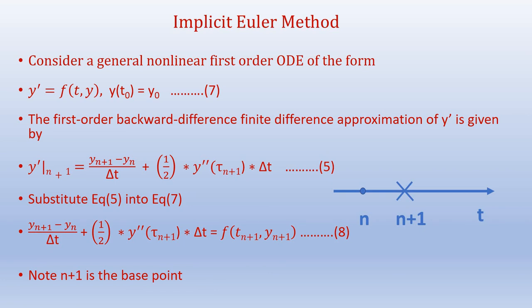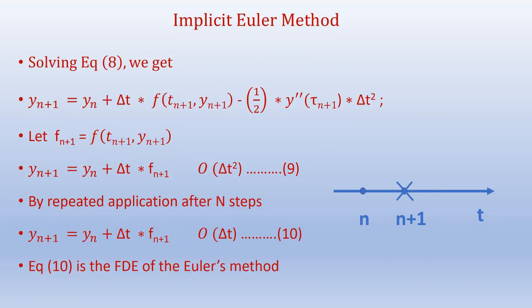Note that in this case n plus 1 is the base point. When we rearrange equation 8, we get y n plus 1 equals y n plus delta t times f of t n plus 1 comma y n plus 1, minus half y double dash tau n plus 1 times delta t squared. If we let f n plus 1 equals f of t n plus 1 comma y n plus 1, we have y n plus 1 equals y n plus delta t times f n plus 1, and this is of the order of delta t squared.